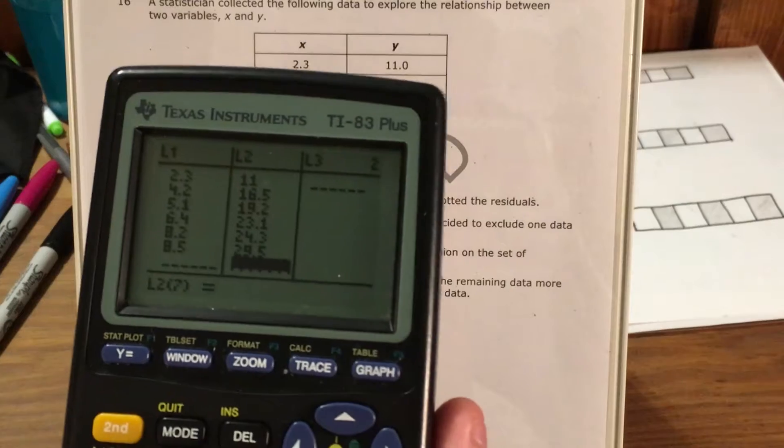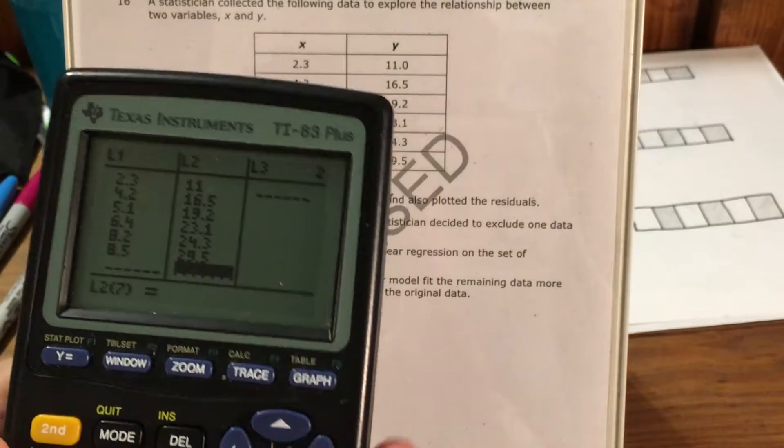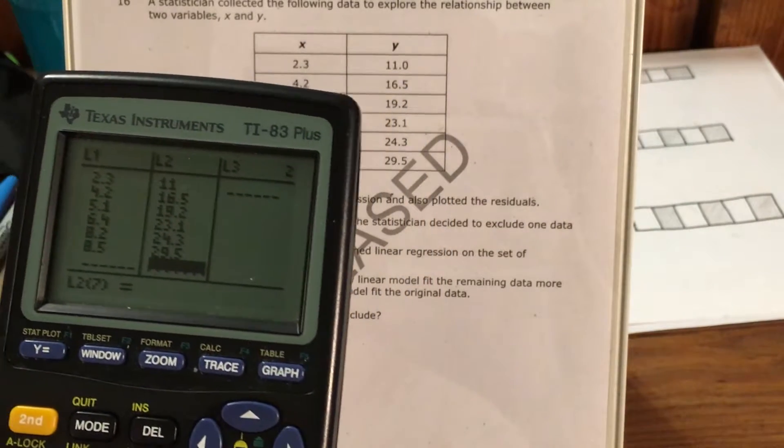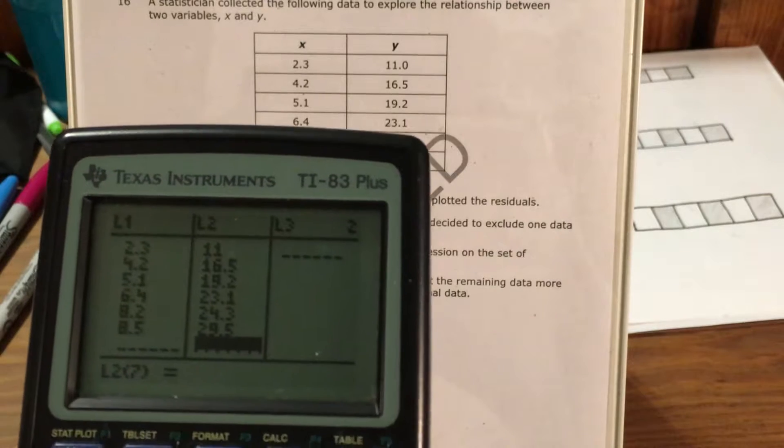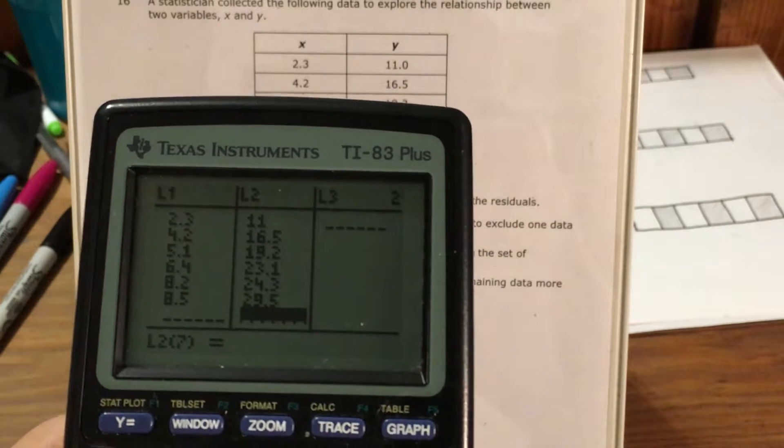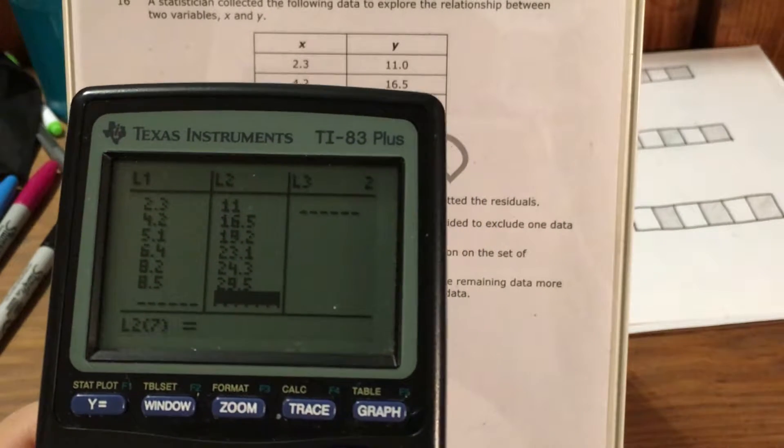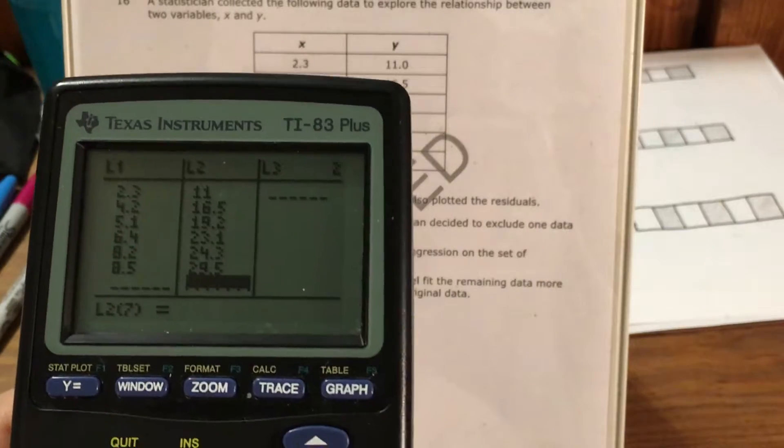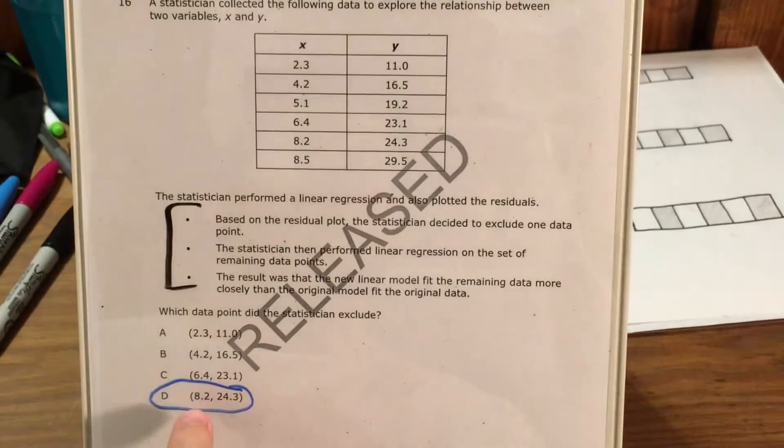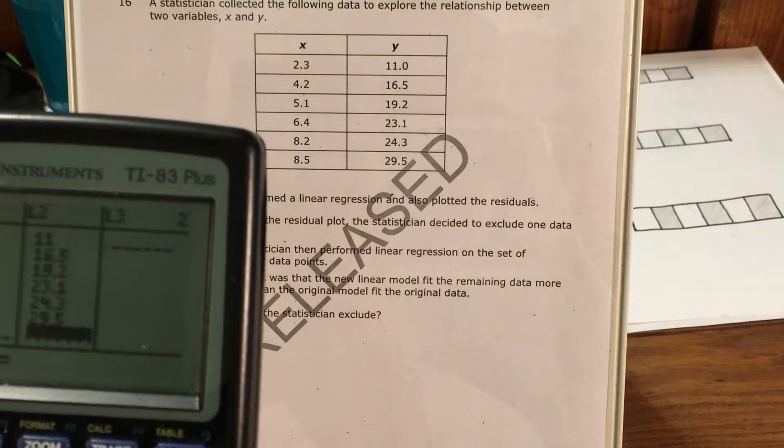So here's all my original data back in here, and I'm actually going to try to figure out, using some actual calculator commands and something more precise, how well my data fits the model before and after I take out that point, just so I can have some numerical confirmation.